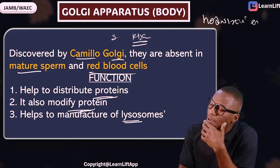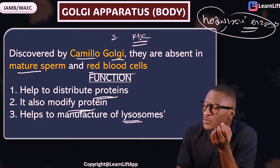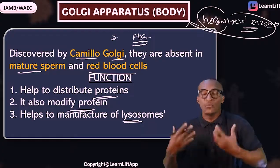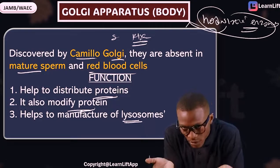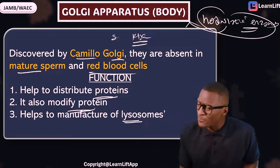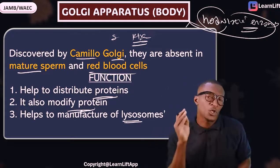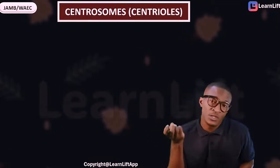Those hydrolytic enzymes help to degrade worn-out tissue. That hydrolytic enzyme found in the lysosome — where is it produced? It is produced from the Golgi body. The Golgi body produces and sends those enzymes to the lysosome.